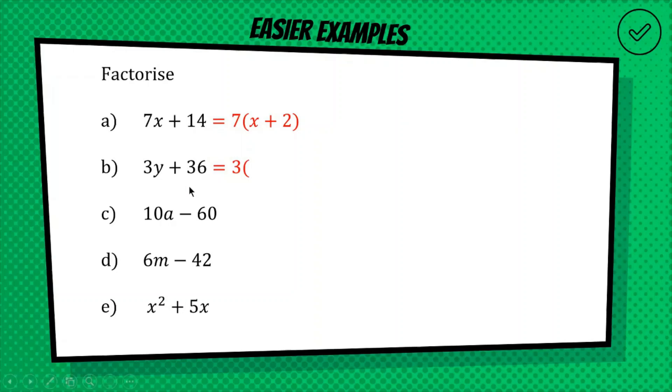All right, so what's inside, we're going to have, well, this is 3 times y, so we're going to have y here, and like I said, this is 3 times 12, and it's a plus, so we're going to have a plus 12 inside our parenthesis. So common factor out the front, and what's left over from the multiplication inside.